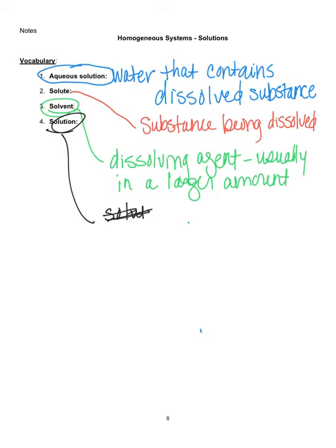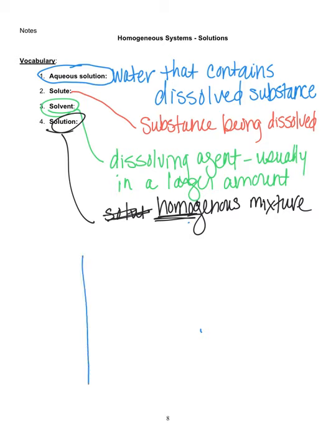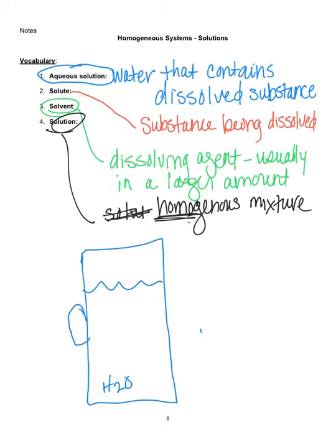What a solution is, though, is a homogeneous mixture. And what that is saying is that it is the same throughout. So let's put this in some really simple details — let's make some Kool-Aid. So I've got a pitcher of water here. That's my Kool-Aid pitcher. This is a really bad drawing.